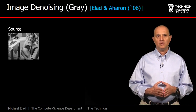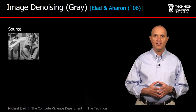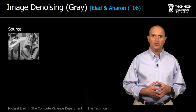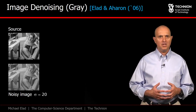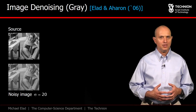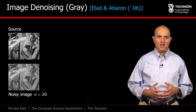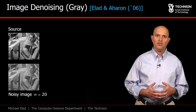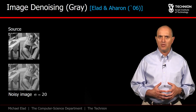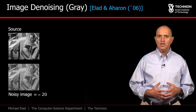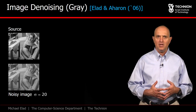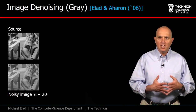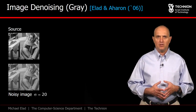One of the most important tasks in image processing is denoising — removal of additive Gaussian noise from an image while preserving its content. We see here the original image and its noisy version. An algorithm we developed in 2006 together with Michal Aaron suggested cleaning the image by operating on small overlapping patches, projecting each of them to the Sparsland model.